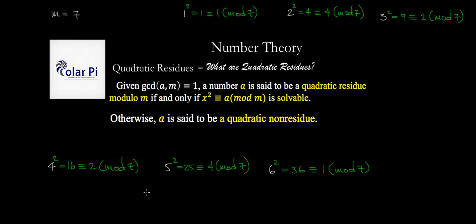So we see that 1, 2, and 4 are the only quadratic residues mod 7. Let's abbreviate this as quad res - quadratic residues mod 7.